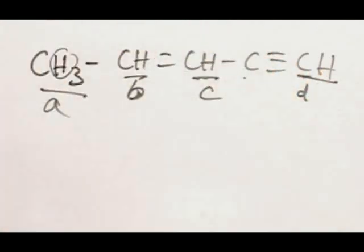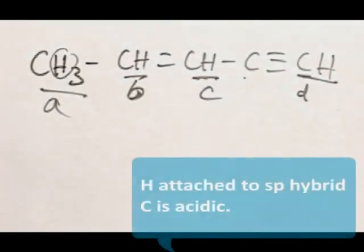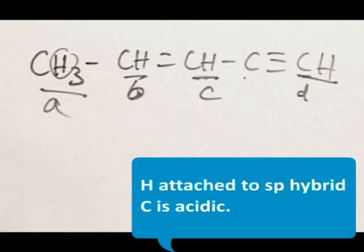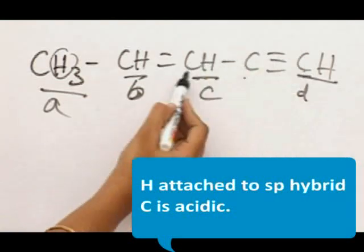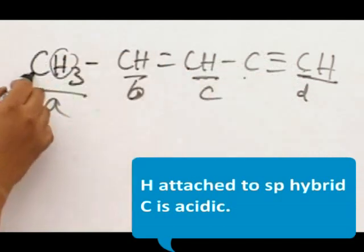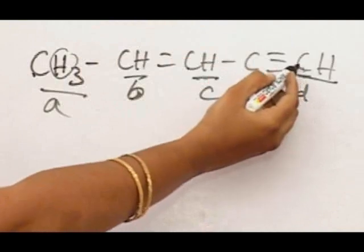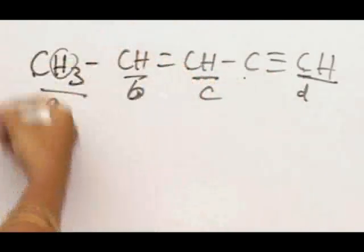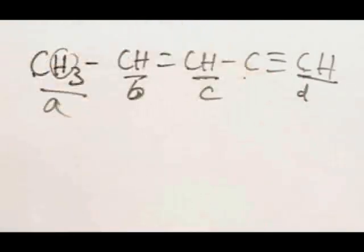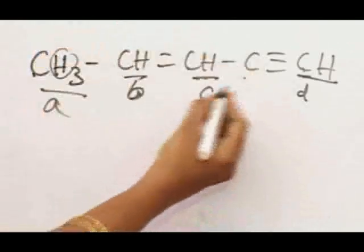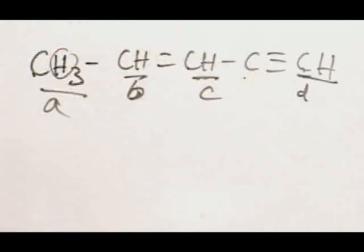Acidic nature depends upon the S character — whichever has more S character, meaning S orbital, will be more acidic. Moreover, at the triple bond the carbon is SP hybridized, this carbon is SP2, and obviously this is SP3. Therefore, this is more acidic compared to any other hydrogen atoms, so hydrogen D is more acidic in nature.